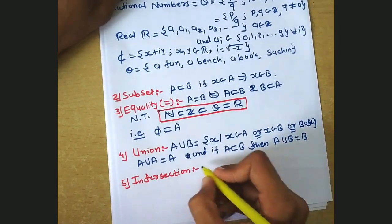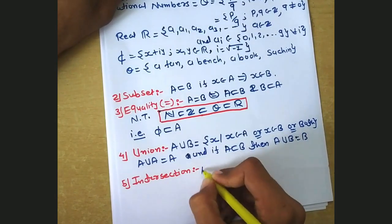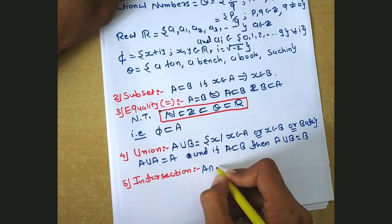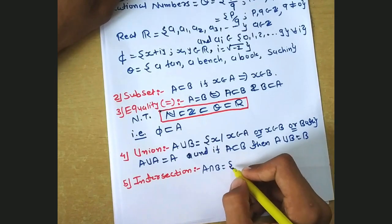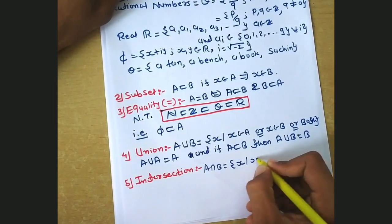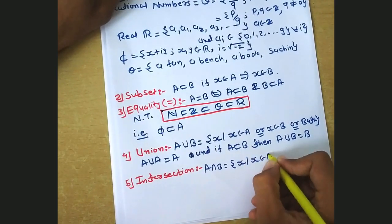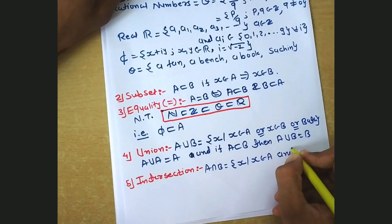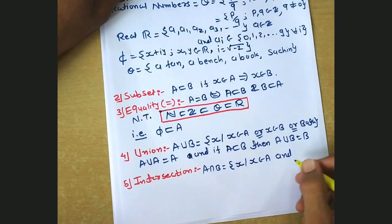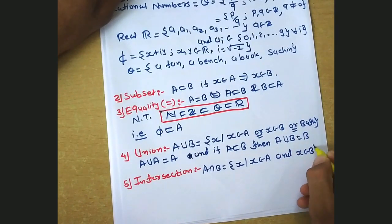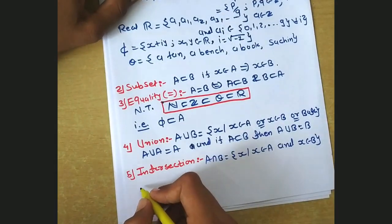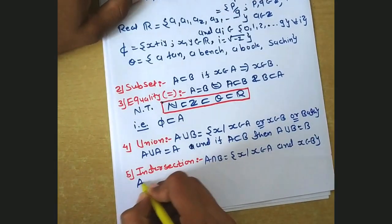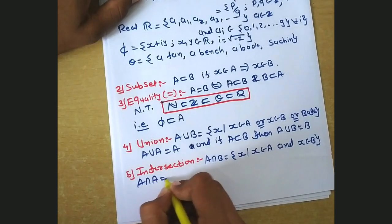Similarly, for intersection: A intersection B is the set of all x where x belongs to A and x belongs to B. We also know that A intersection A is equal to A.